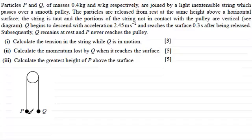Now we know that P has a mass of 0.4 kg, so its weight is going to be 0.4g newtons. And the weight of Q is m kilograms, so that's going to be mg newtons.